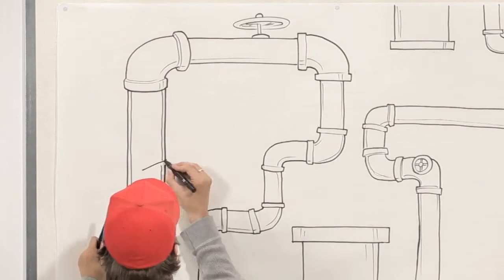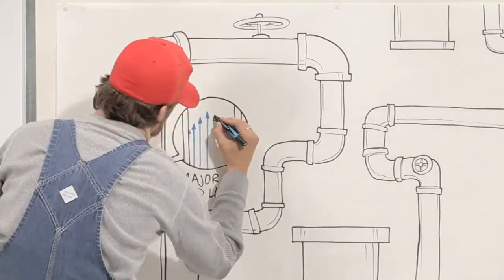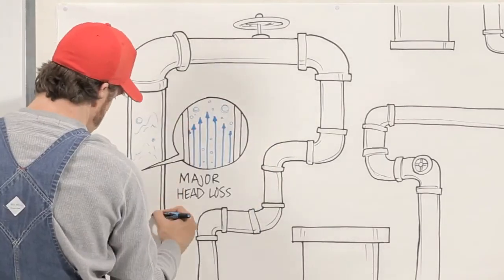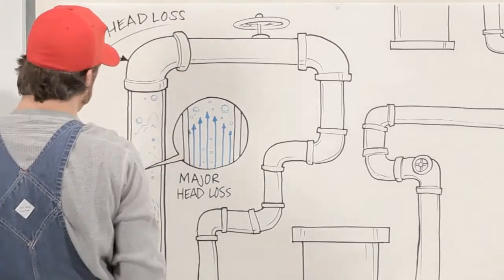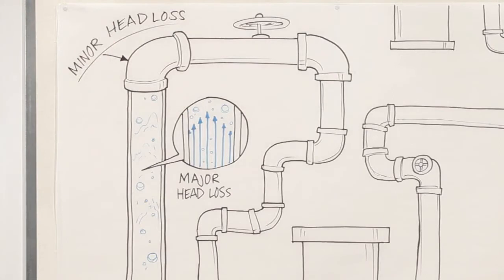Here, energy gets lost in two ways. By fluid drag against the walls of the pipe itself, which is called major head loss, and losses caused by going around corners, or through valves and joints, which is called minor head loss.